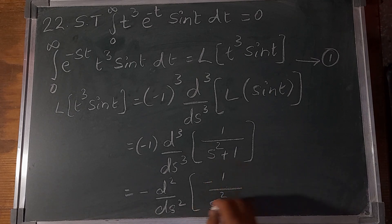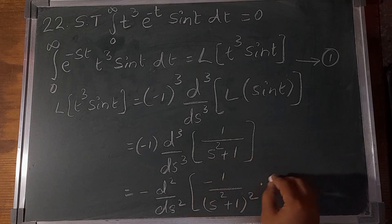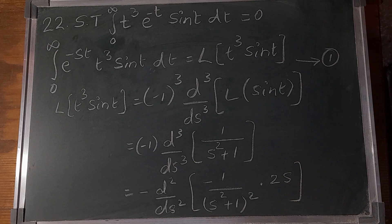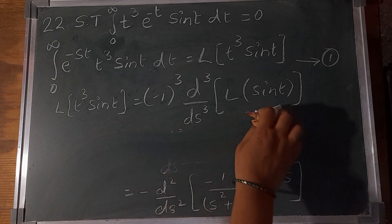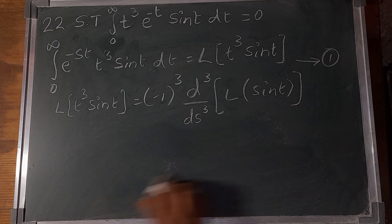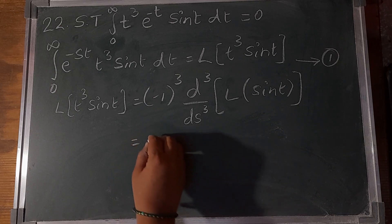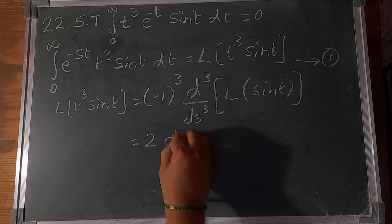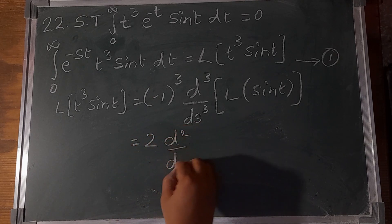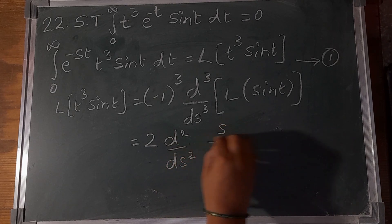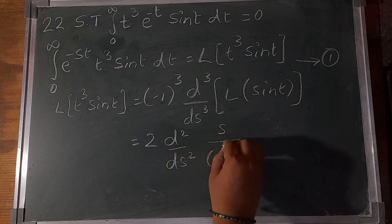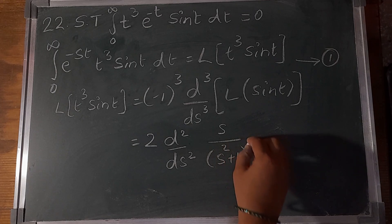Squaring the denominator factor and differentiating again: the differentiation of the denominator is 2s. This gives the second derivative as 2(d²/ds²) of [s/(s² + 1)²].